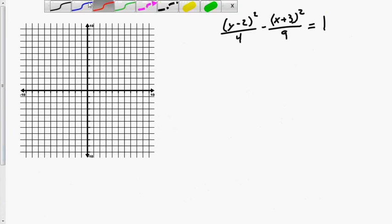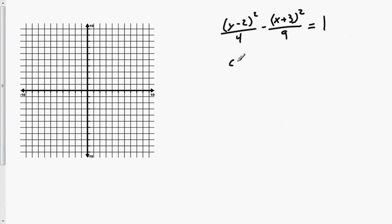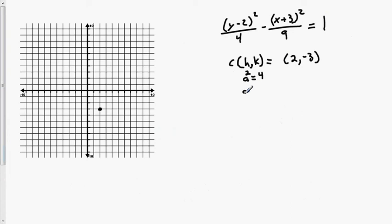Let's look at a hyperbola example. The center is (h, k): changing the sign on plus 2 gives h equals positive 2, and k is negative 3. So center is (2, negative 3). A squared is 4, therefore a equals 2. B squared is 9, therefore b equals 3.